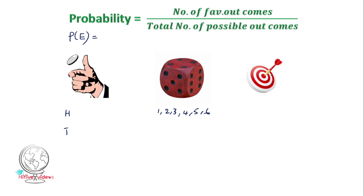Here we can see this dot. This dot is one of the outcomes. This one dot is within the small circle. This red circle is in the outer circle. We can see this red circle; the third red circle is in the outer circle.